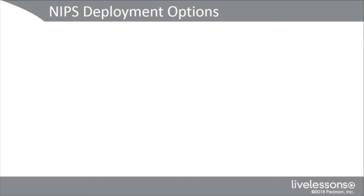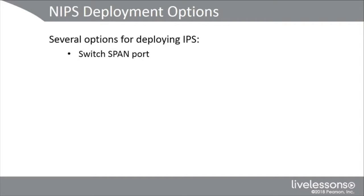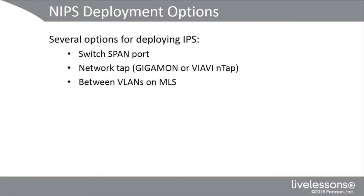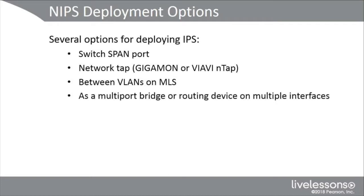We have several ways to deploy network IPS. We can use a span port or RSPAN from a group or matrix of switches to send traffic to our sensor. We can also use a network tap — Gigamon and VIAVI NTAP are two common network tap companies. We can place the sensor between VLANs on a multi-layer switch. The sensor could be a multi-port bridge or a routing device on multiple interfaces. Even if we're deploying inline, we start out in monitor or passive mode and once optimized, go to inline.